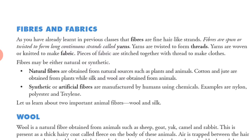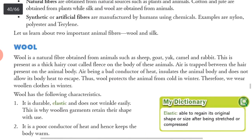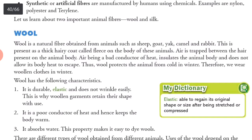Synthetic fibers are manufactured by humans using chemicals. Examples are nylon, polyester and terrylene. Wool is a natural fiber obtained from animals such as sheep, goat, yak, camel and rabbit.